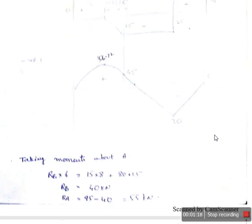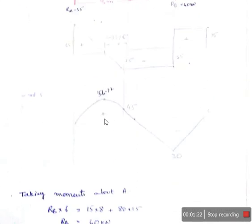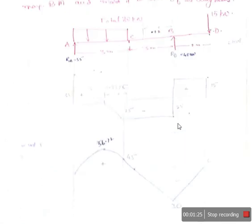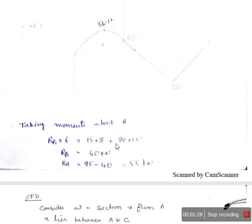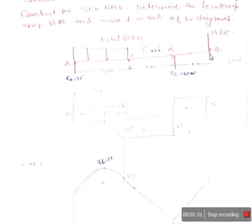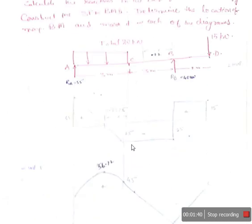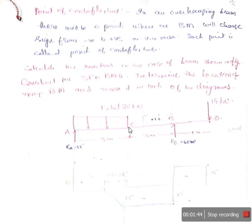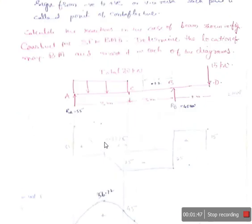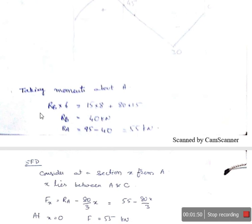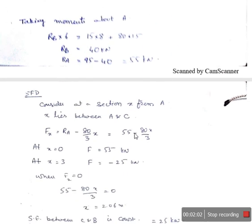Taking moments about A to find the reaction at B: RB into 6 equals 15 into 8 (that is 3 plus 3 plus 2) plus 80 into 1.5. Here, 80 is the total load for the UDL acting at the midpoint of the 3-meter span, that is 1.5 meters. By calculation, RB equals 40 kilonewtons. Then RA equals total load minus RB, giving RA equal to 55 kilonewtons.